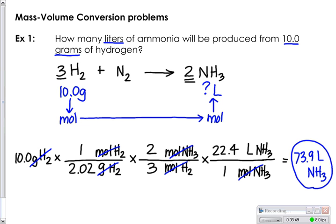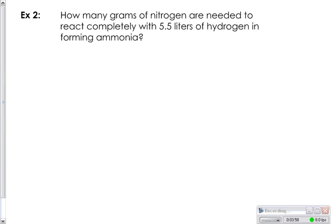This was an example where the given was in grams and what you were trying to find was in liters. However, you can also do problems where the opposite is asked, where the given is in liters and what you're trying to find is in grams. Using the same equation, if you read this problem: how many grams of nitrogen are needed to react completely with 5.5 liters of hydrogen in forming ammonia, we know we're going to use the exact same chemical reaction that we had before.